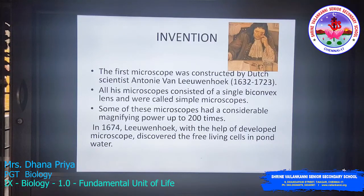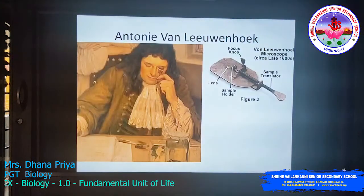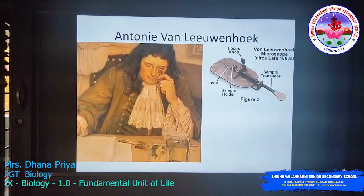So to summarize: Robert Hooke was the person who discovered the cell in 1665, while Antonie van Leeuwenhoek discovered the first free-living cells in pond water in the year 1674. Here you can see the small simple microscope used by Leeuwenhoek.